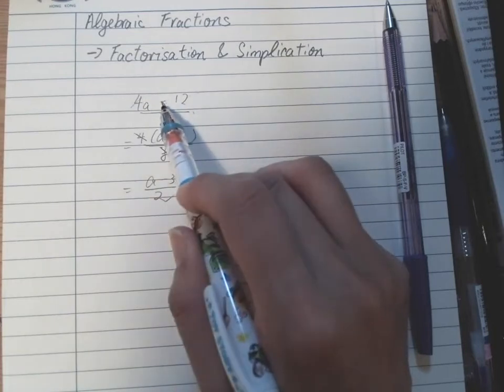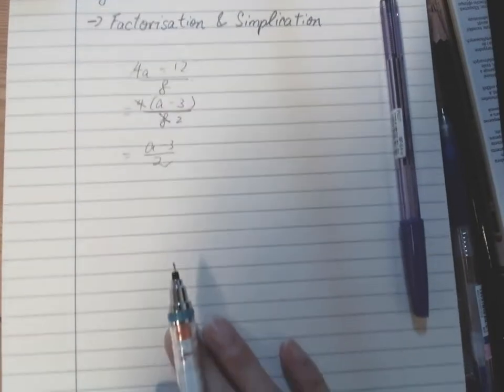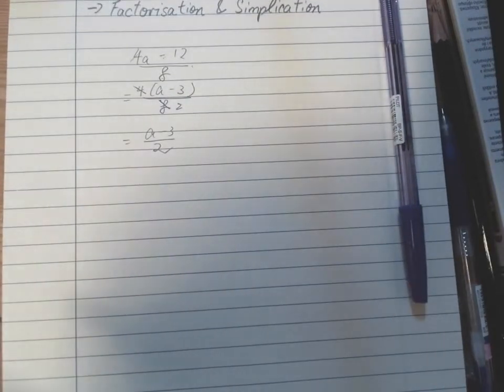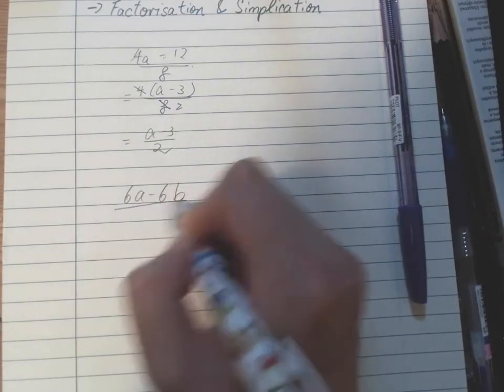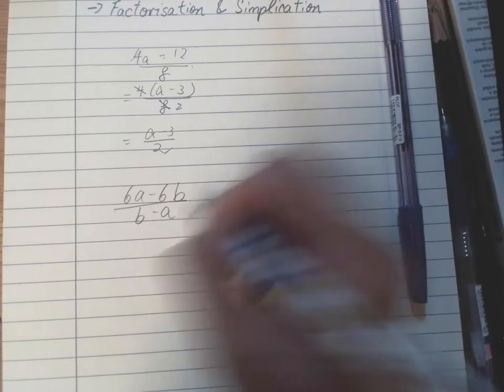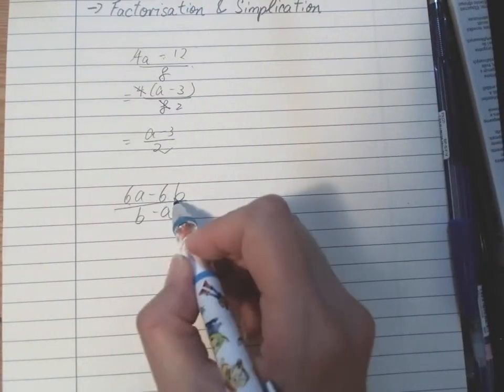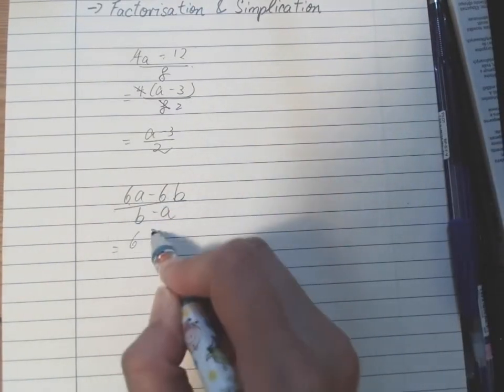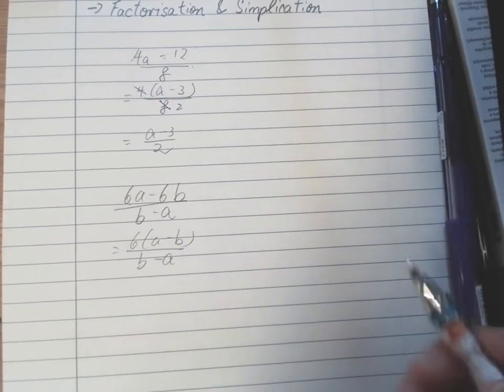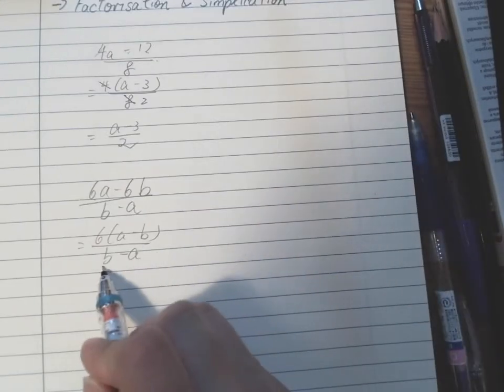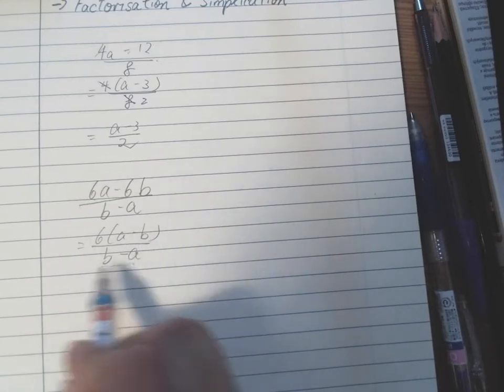There's another trick here. Sometimes when you see 6a minus 6b over b minus a, first of all we see the 6, so we take the 6 out. So we have 6 times (a minus b) over (b minus a). Now here's the trick, because when we see this, they're different. I need to swap.